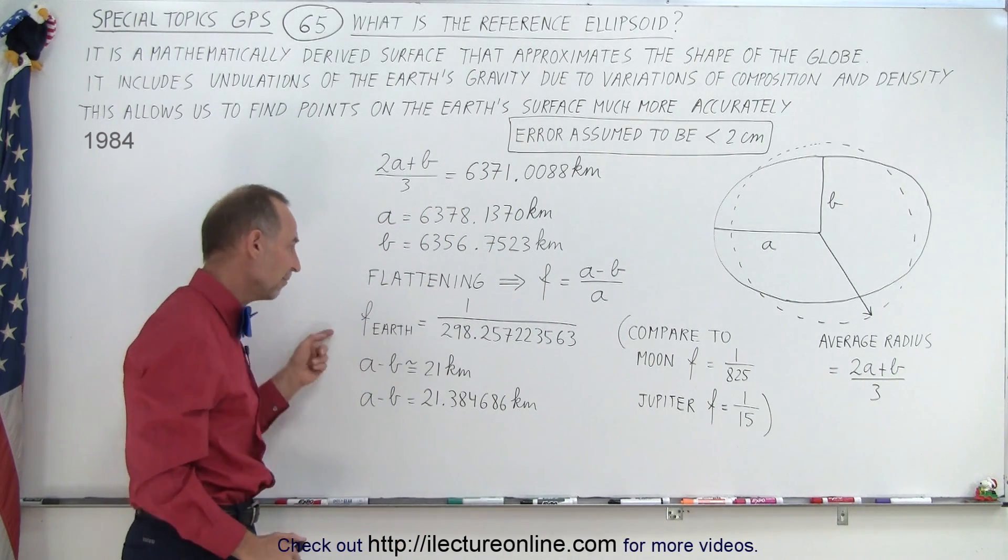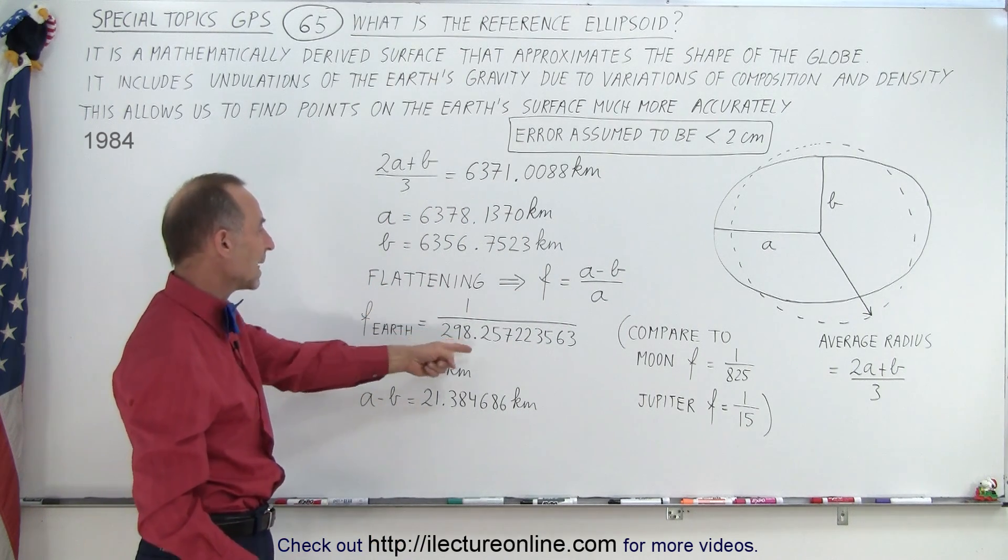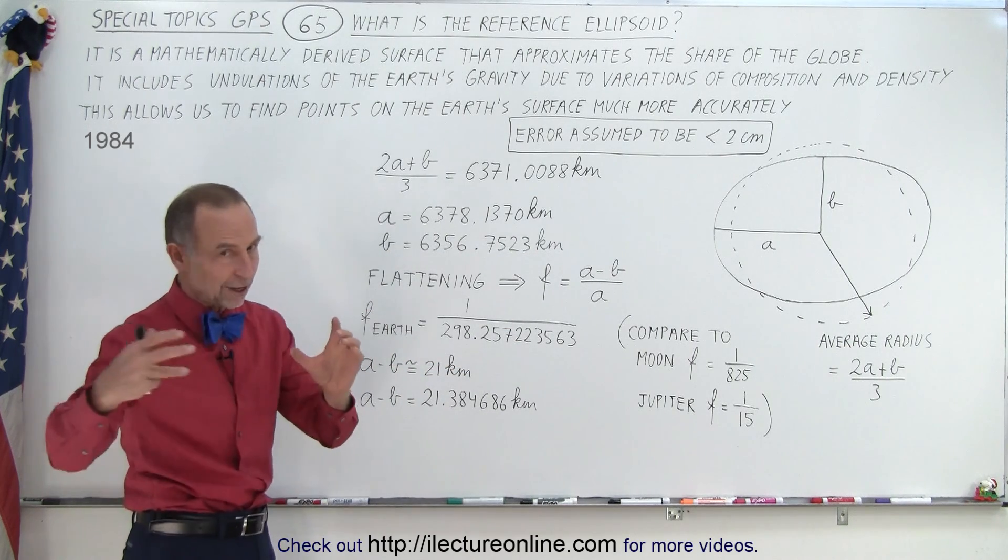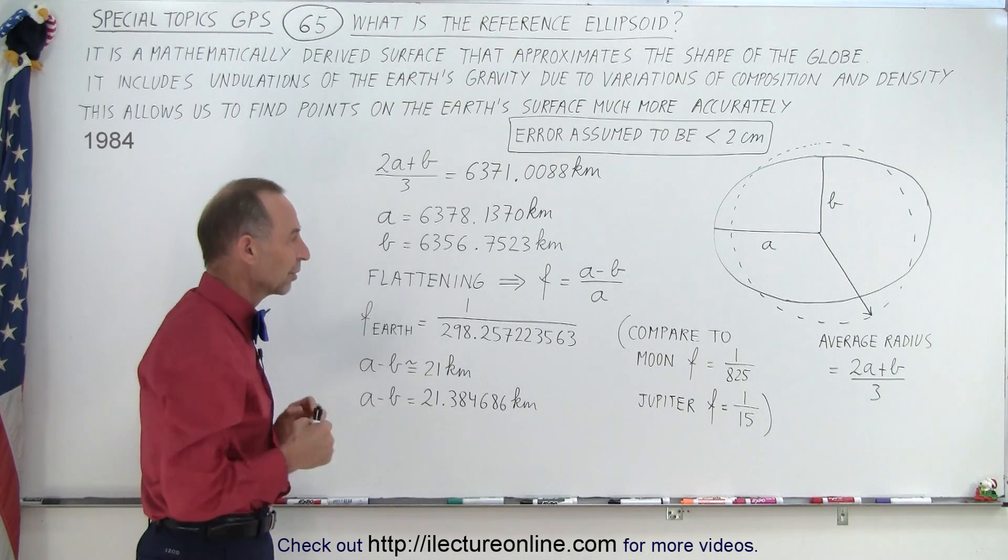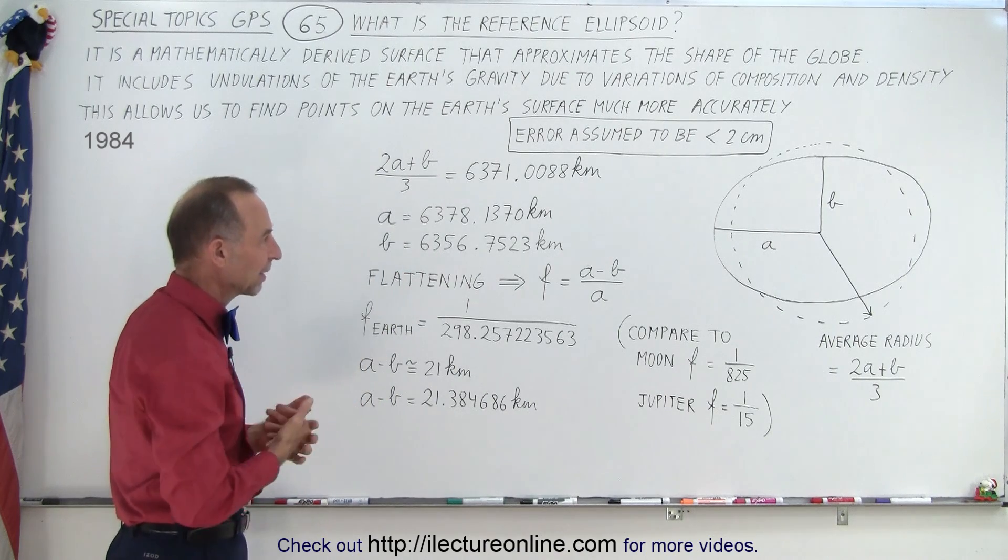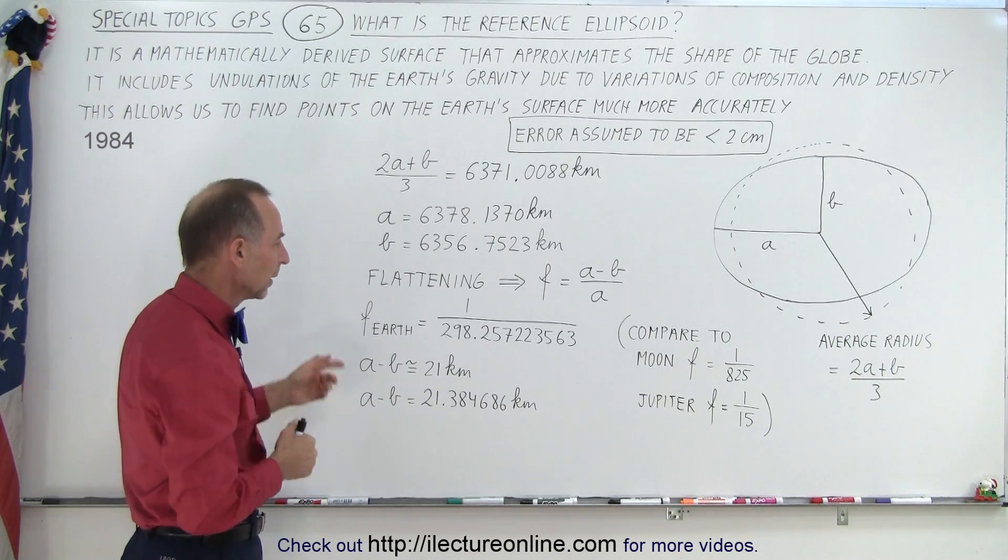We give it the letter F. And for the Earth, it's 1 over 298.257223563. It goes on extremely accurately. And that's why we have that very accurate model.